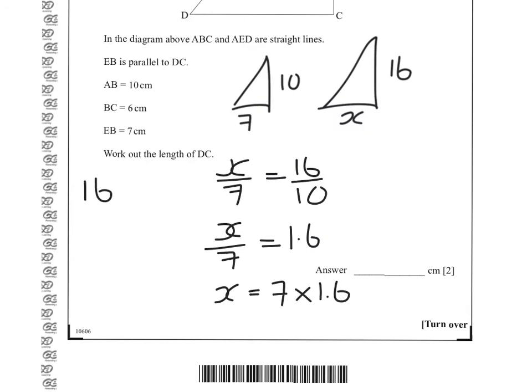If I do 16 times 7, 7 sixes are 42, 7 times 1 is 7, plus 4 is 11. Then 7 times 1.6 must be 11.2.